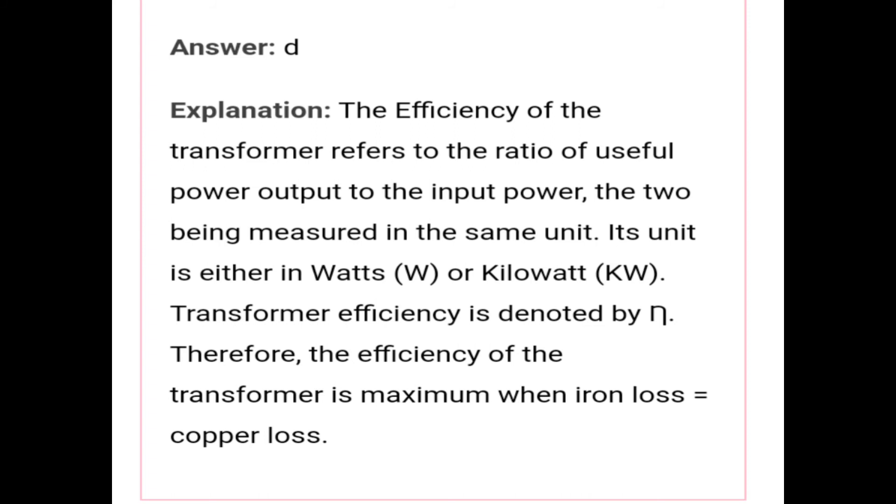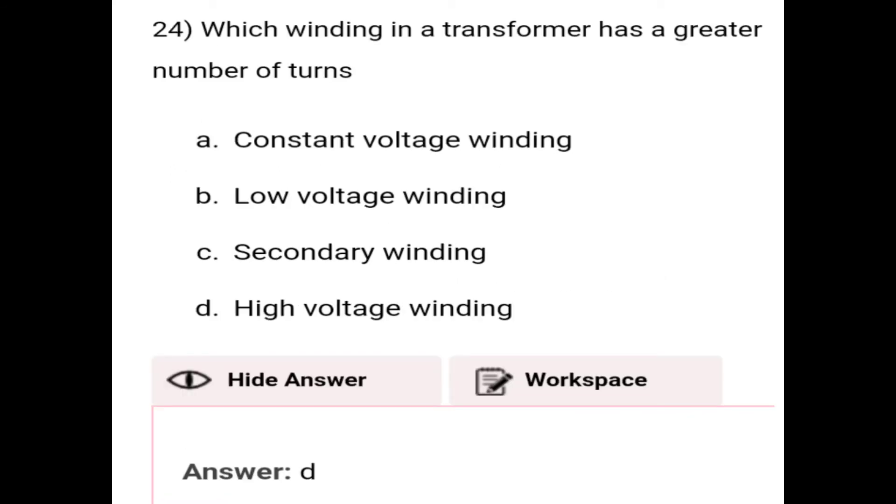The explanation is that the efficiency of the transformer refers to the ratio of useful power output to the input power, the two being measured in the same unit. Its unit is either in watts or kilowatts. Transformer efficiency is denoted by mu. Therefore, the efficiency of the transformer is maximum when iron loss equals copper loss.